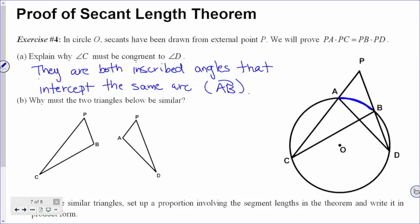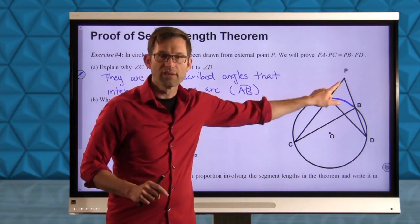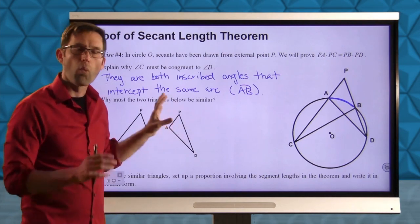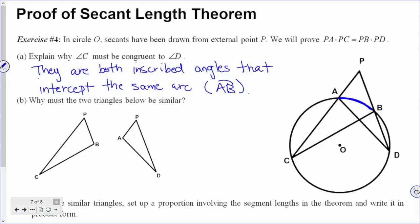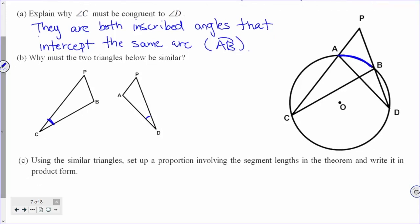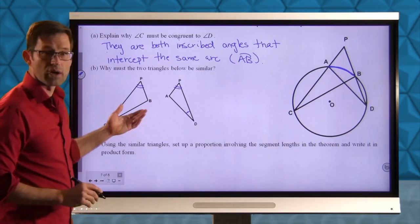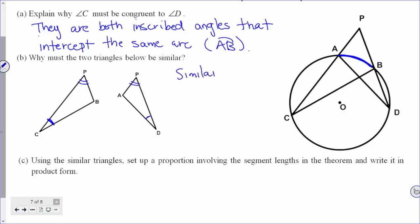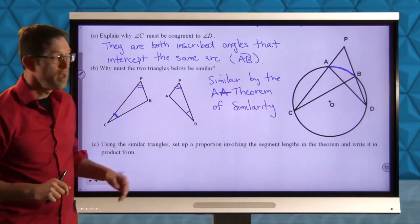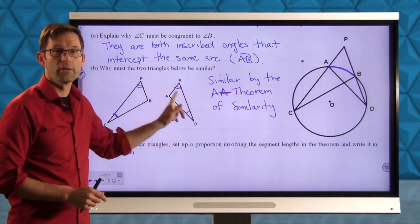Letter B: why must the two triangles be similar? We have triangle PCB and triangle PAD. First, we just showed angle C is congruent to angle D. Additionally, they share angle P. Therefore the two triangles are similar by the Angle-Angle theorem of similarity.